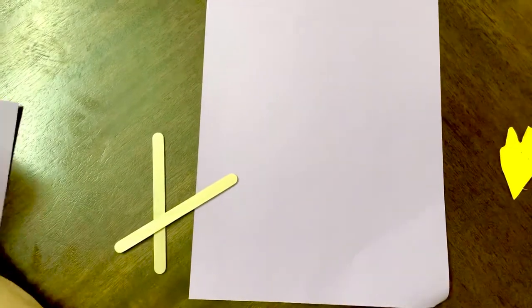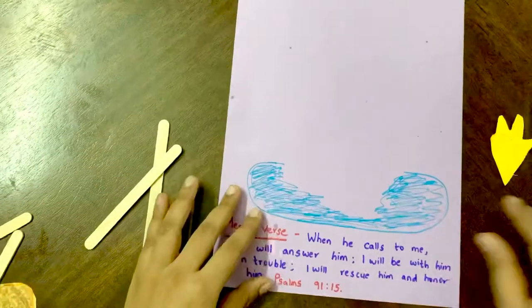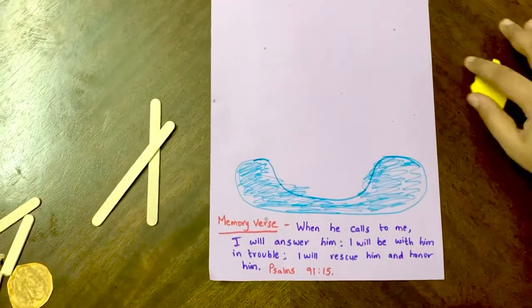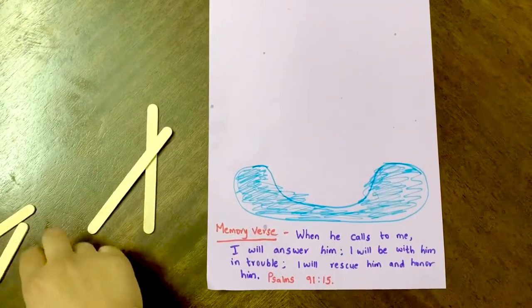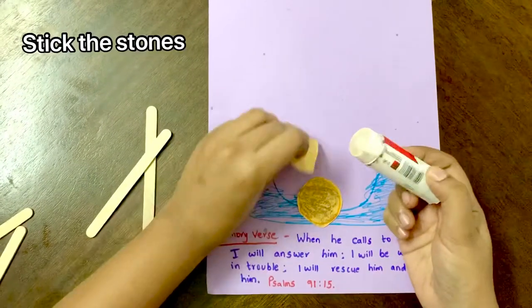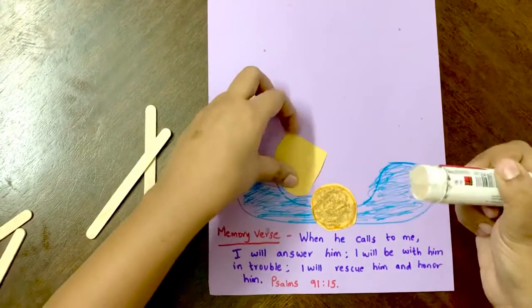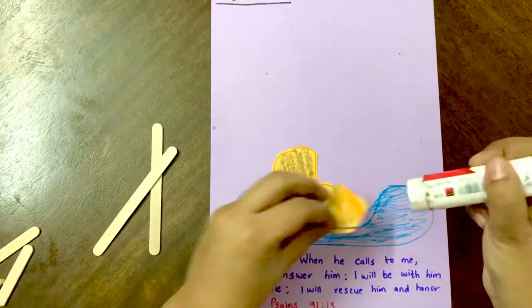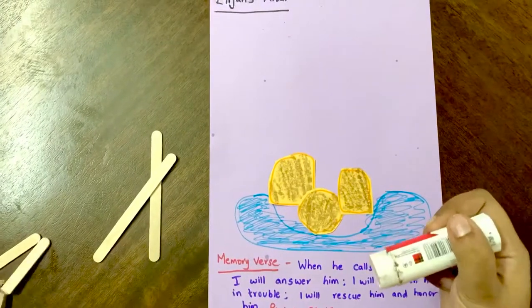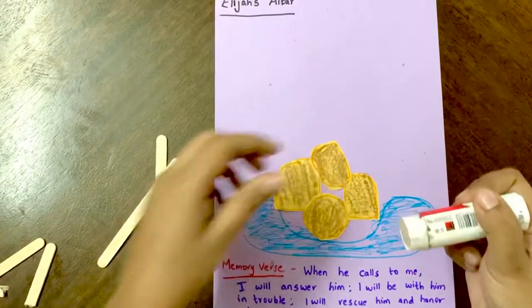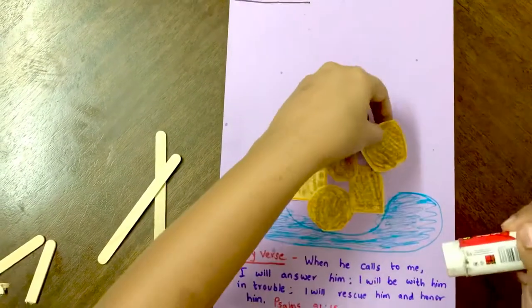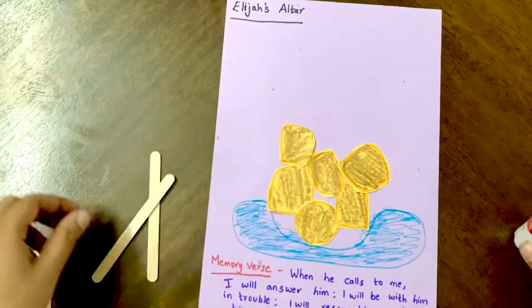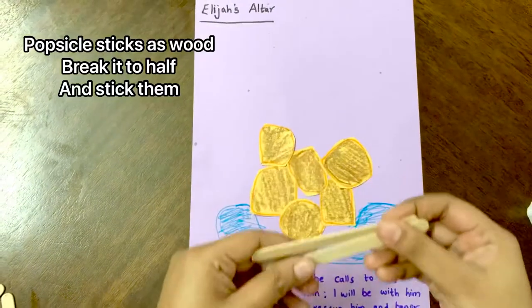So first, let's draw the water here. Then take the stones. Take the popsicle sticks and break them into pieces.